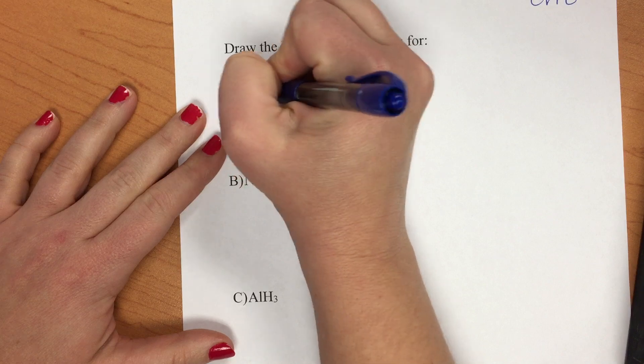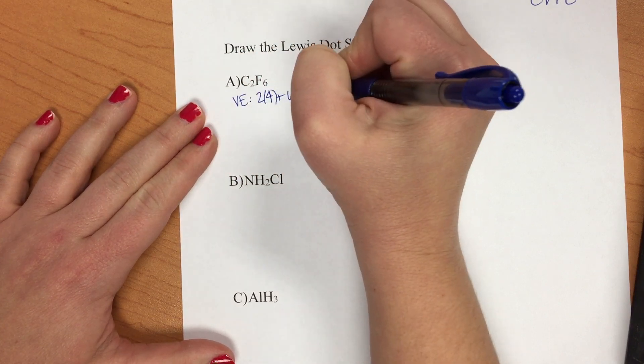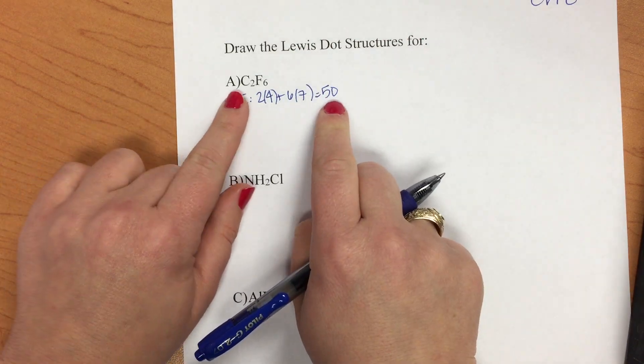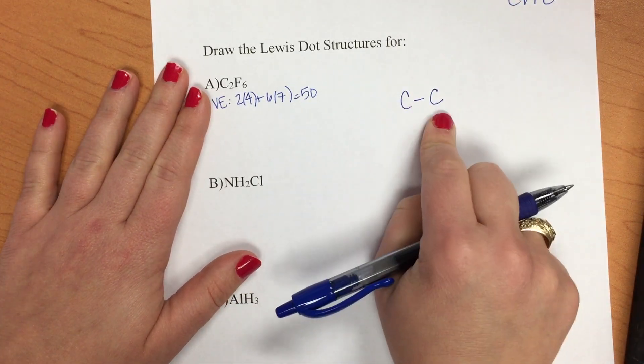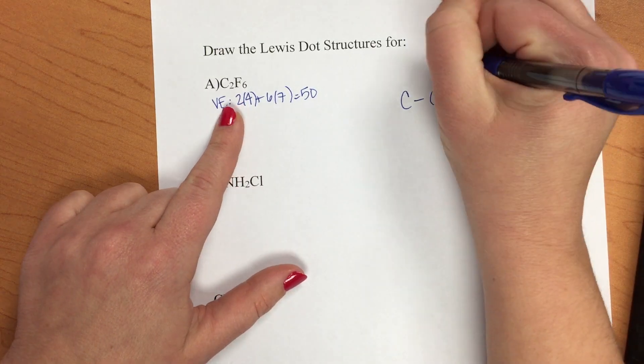So carbon has four valence electrons, so 2 times 4 plus 6 times 7 equals 50 valence electrons. In this case you would have been provided that there is a CC bond in this molecule. So we know there are two carbons connected to one another. The six fluorines are going to go around those.